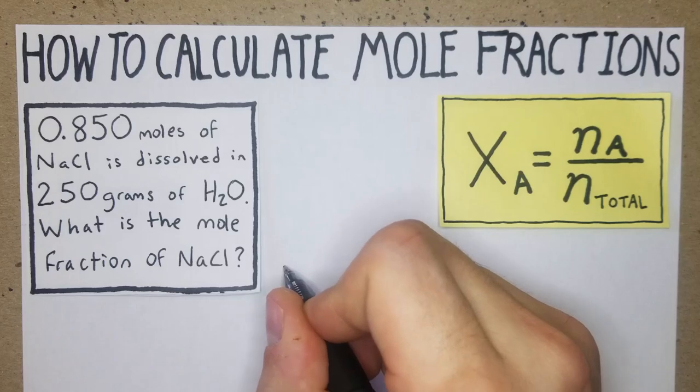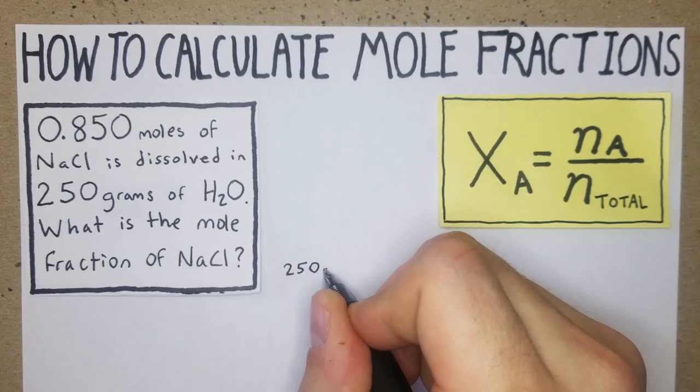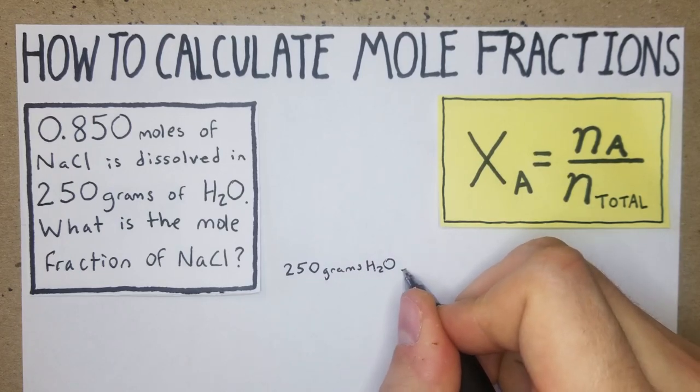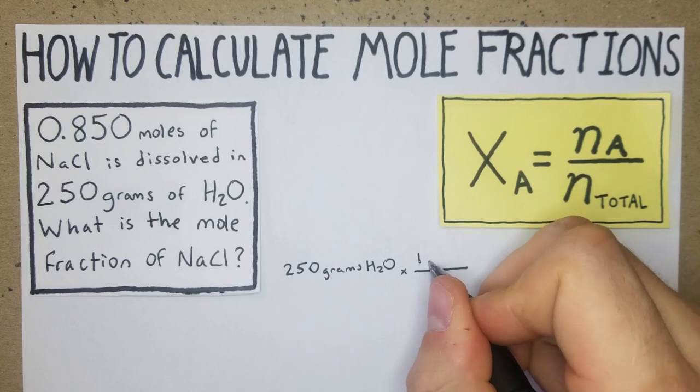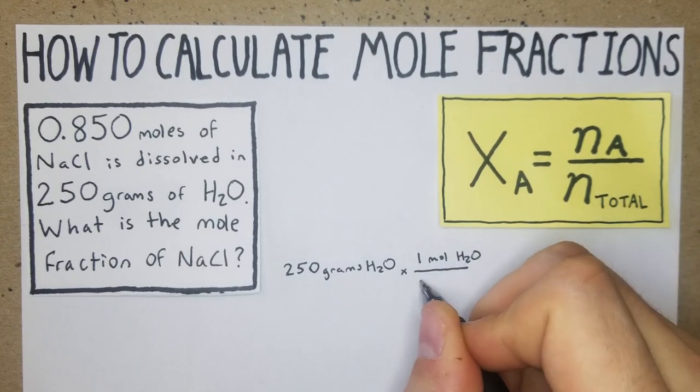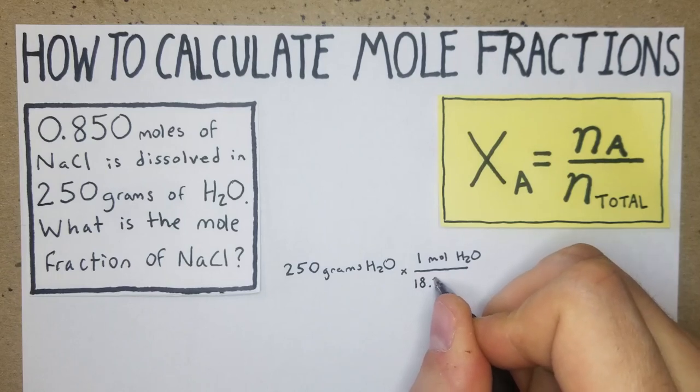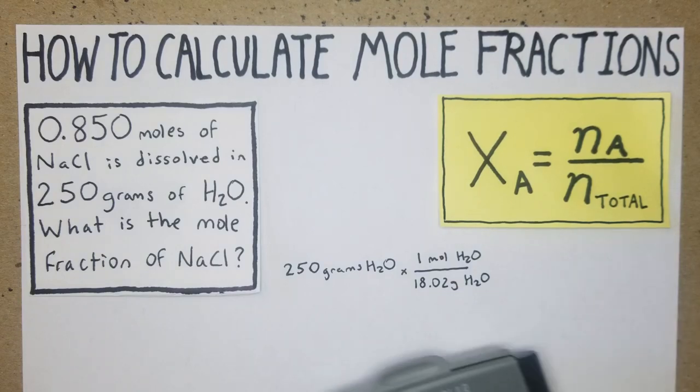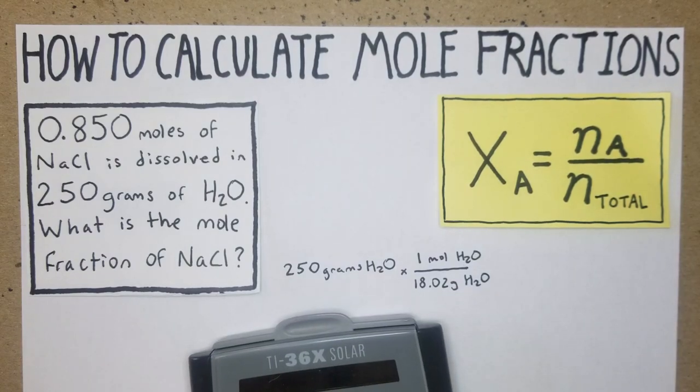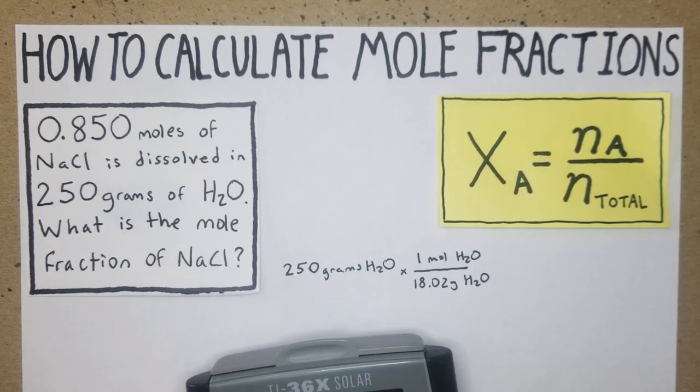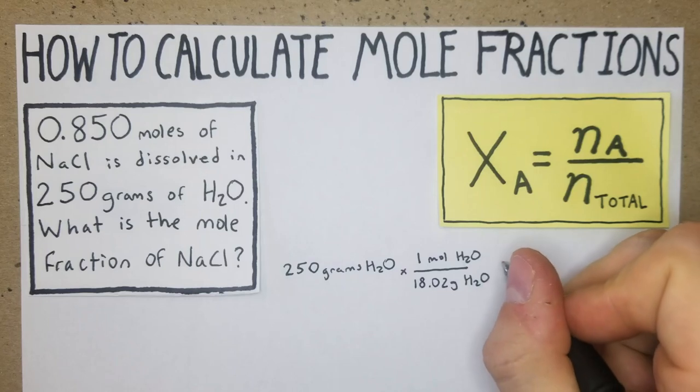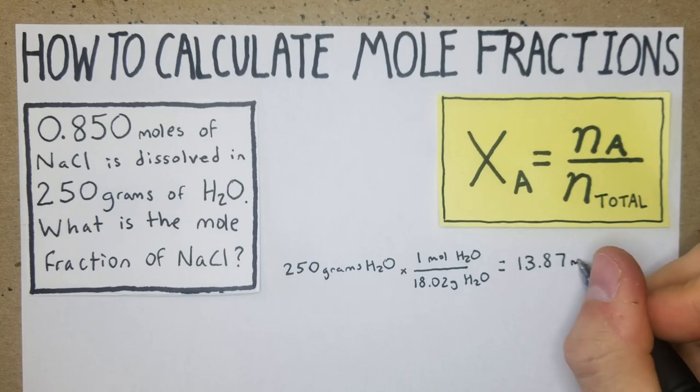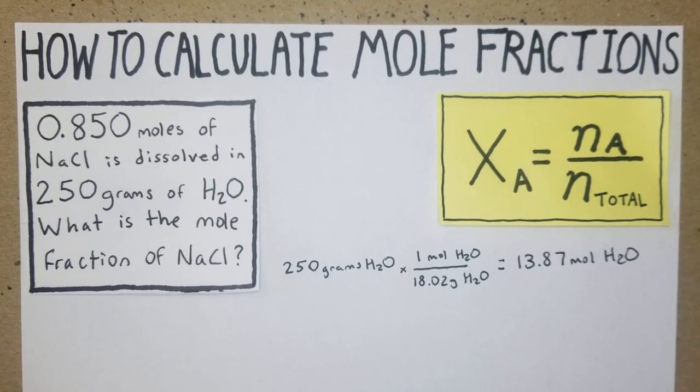So first we're going to want to get our H2O into moles. We have 250 grams of H2O times one mole of H2O per 18.02 grams of H2O. Now we just quickly do that calculation: 250 divided by 18.02 gives us 13.87 moles of H2O. So now we know how many moles of water we have, now we can go from there and get the mole fraction.